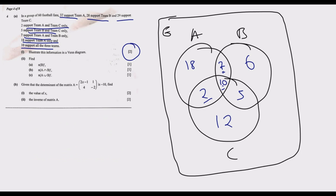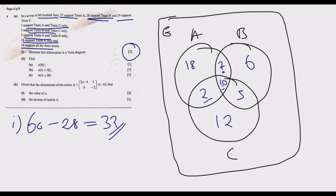Part (b): find the number of fans that do not support Team B, which is the complement of B. We know the total fans are 60 and Team B has 28 supporters, so B complement equals 60 minus 28, which equals 32. Alternatively, you can add 12 plus 2 plus 18 to get 32. That's one mark.